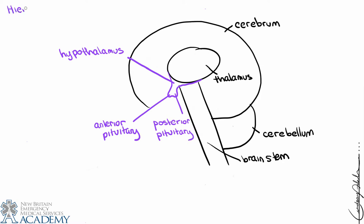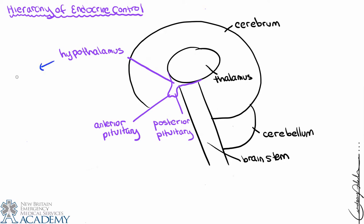We consider the hypothalamus and the pituitary gland first because of the hierarchy of endocrine control. The hypothalamus is the highest level of control, and it exerts its control over the pituitary gland, which then exerts its control over other peripheral organs, tissues, and cells. The hypothalamus is an important link between the nervous system and the endocrine system, and it does three important things.